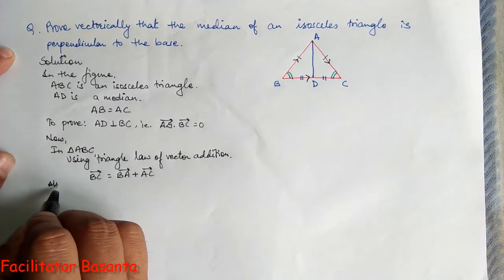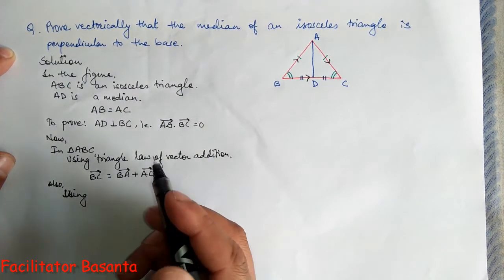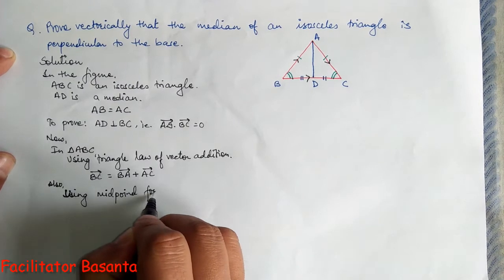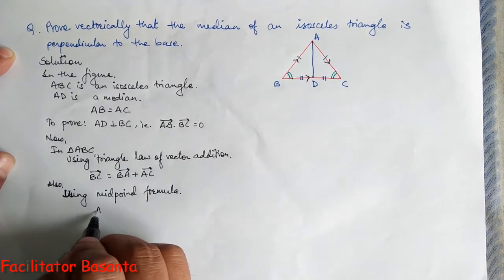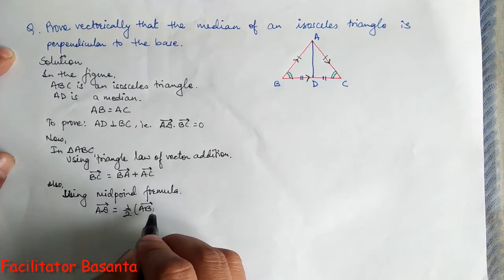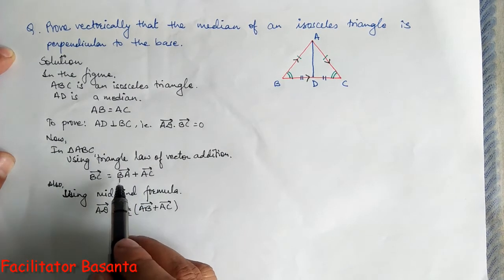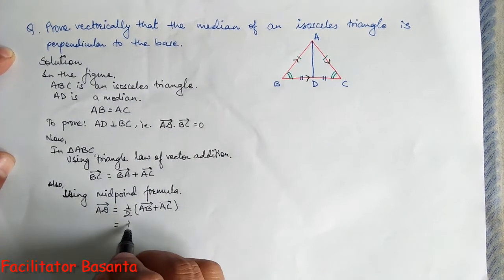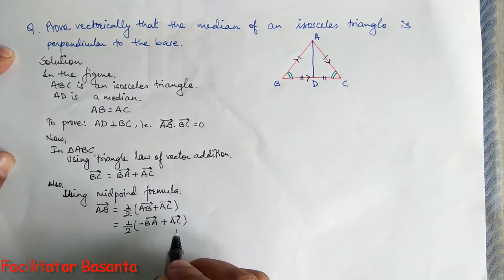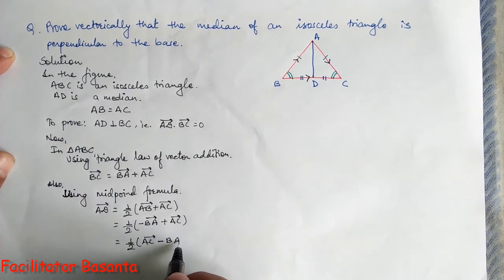Also, using the midpoint formula in the same triangle ABC, AD vector equals half of AB vector plus AC vector. Since AB is the negative of BA vector, this gives AD vector equals one-half of AC vector minus BA vector.